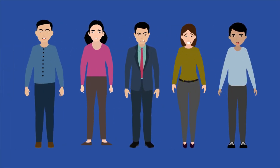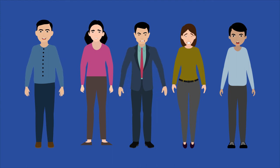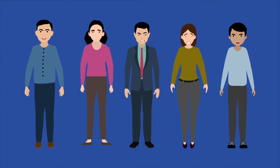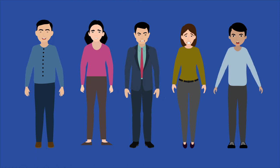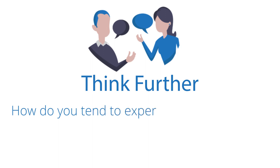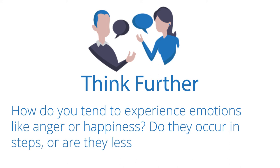Everyone experiences emotions differently and they're influenced by many factors such as prior knowledge, awareness, and surroundings. If you don't experience anger or euphoria the same way as the next person, that's completely normal. Maybe you have a higher inclination to process feelings in the moment, or perhaps you tend to be very aware of complicating factors that could be affecting your mood. If there's one thing the Schachter and Singer experiment proved, it's that emotions aren't as simple as we make them out to be. Now it's your turn to think further: how do you tend to experience emotions like anger or happiness? Do they occur in steps or are they less structured?